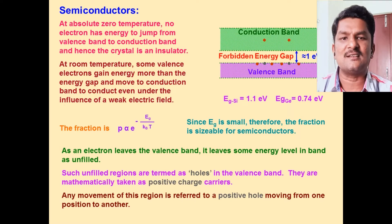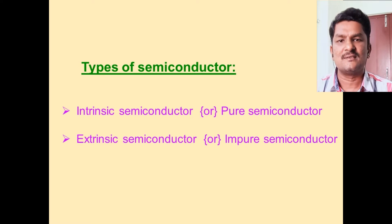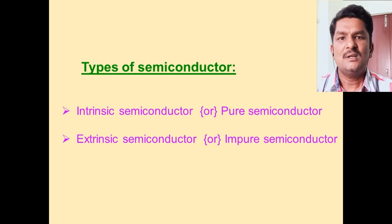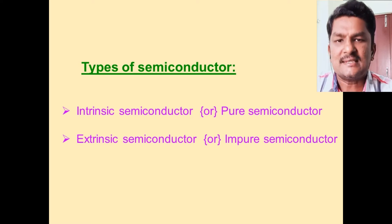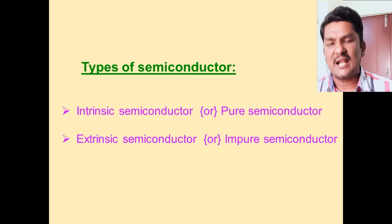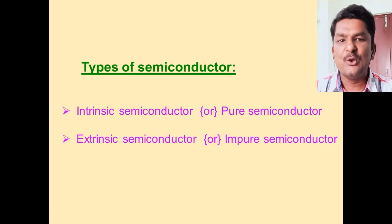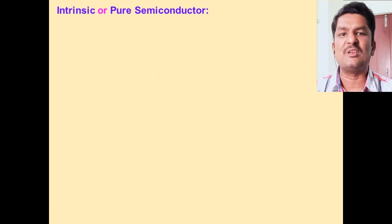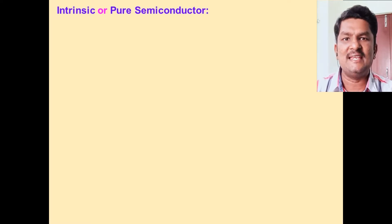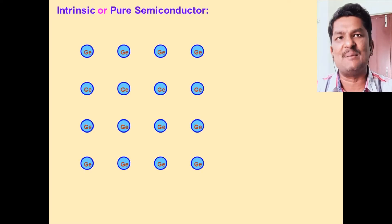Our topic today is types of semiconductors — that is, pure semiconductors and impure semiconductors. A pure semiconductor is also named as an intrinsic semiconductor.